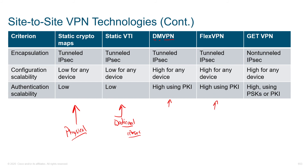FlexVPN is a broad term that takes all the different styles of configuration — things used on VTIs, DMVPN, and group encrypted transport (used on top of MPLS) — and brings together the different constructs used to build a VPN topology, whether site-to-site or remote access. FlexVPN ties it all together with a simplified, logical construction so we can support lots of types of connectivity with a single configuration set.